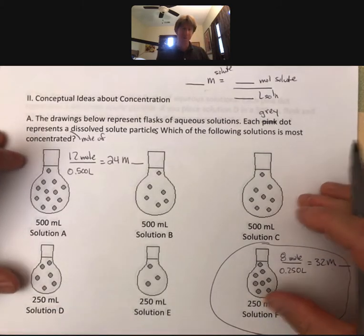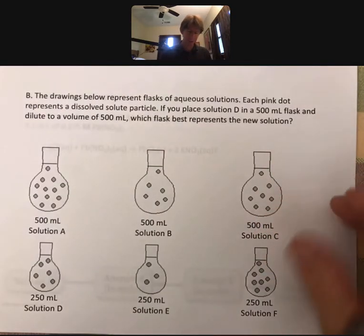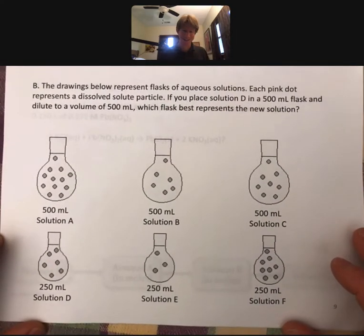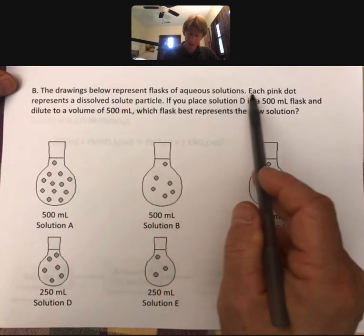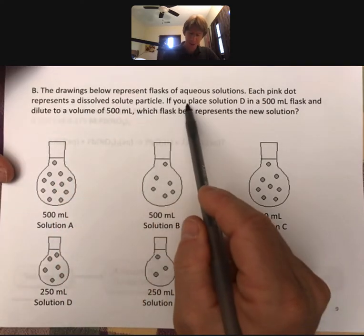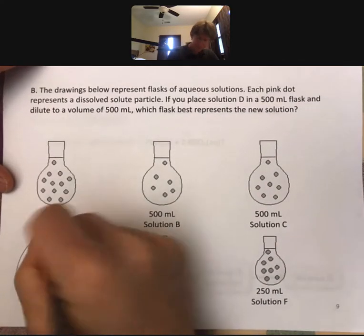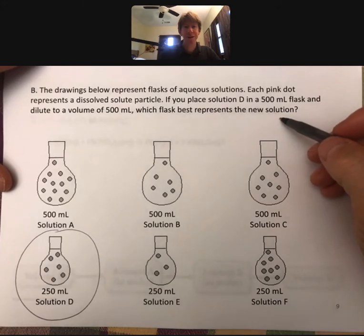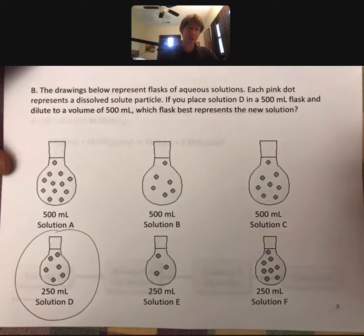Let's try another one - slightly different type of problem but the same pictures, oddly enough. This one says represent flasks of aqueous solution, each pink dot represents a dissolved solute particle. So same starting place. If you place solution D, which is right here, in a 500 milliliter flask and dilute to a volume of 500 milliliters, which flask best represents the new solution?